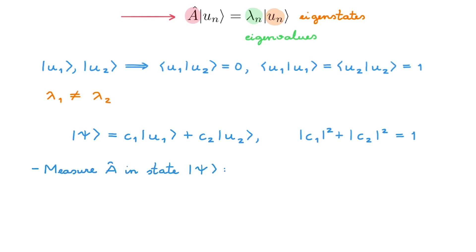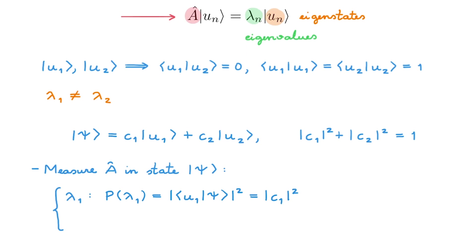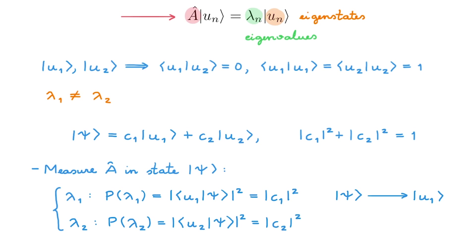In our example, we're only going to consider two eigenstates, u1 and u2. We assume they correspond to distinct eigenvalues, so we can say straight away that they are orthogonal, and we're also going to assume they're both normalized. Now imagine that we build a quantum state psi as a linear superposition of these two states, where we insist that the coefficients c1 and c2 obey this relation to ensure that psi is normalized. We're now going to consider what happens when we measure property A in state psi.